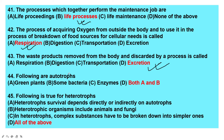The following are autotrophs: green plants, some bacteria, enzymes, and both A and B. Green plants are autotrophs and a few bacteria are also autotrophs. The autotrophic mode of nutrition is divided into two: photosynthesis in green plants and chemosynthesis in a few bacteria.